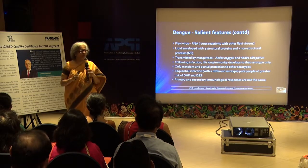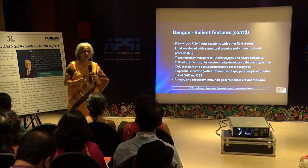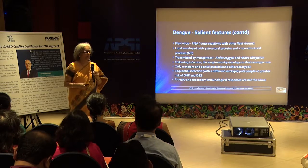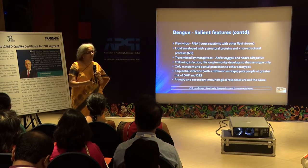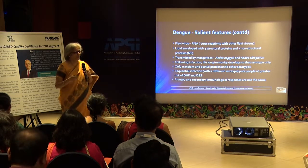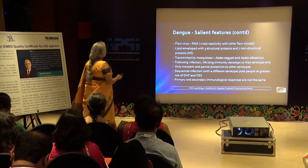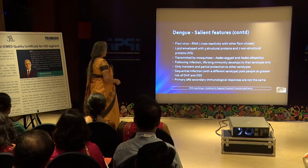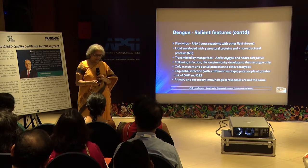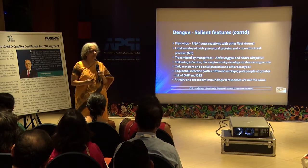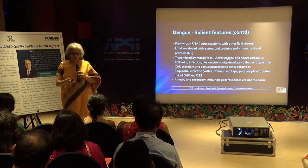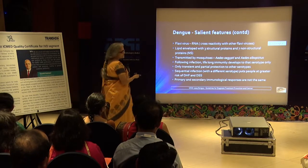Following infection there is lifelong immunity, but only to that particular serotype — leaving you open to infection by other serotypes. The problem arises when another serotype infects the same patient. These are the patients who generally develop dengue haemorrhagic fever and dengue shock syndrome. Sequential infection puts people at greater risk. This is one disease that tells us one test alone is not sufficient, because primary and secondary immunological responses are totally different.